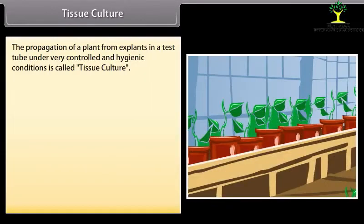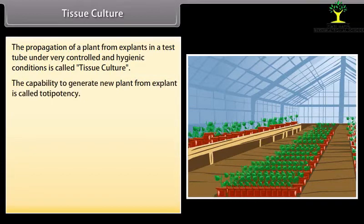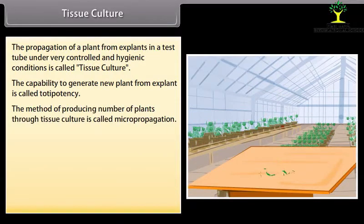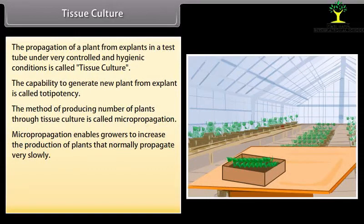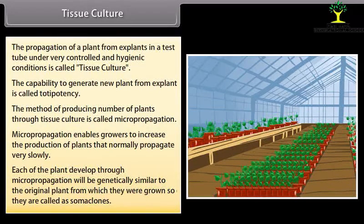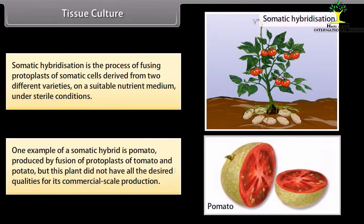Tissue culture: The propagation of a plant from explants in a test tube under very controlled and hygienic conditions is called tissue culture. The capability to generate a new plant from an explant is called totipotency. This method of producing plants through tissue culture is called micropropagation. Micropropagation enables growers to increase production of plants that normally propagate very slowly. Plants developed through micropropagation are genetically similar to the original plant and are called somaclones. Somatic hybridization is the process of fusing protoplasts of somatic cells from two different varieties on a suitable nutrient medium under sterile conditions. One example is pomato, produced by fusion of protoplasts of tomato and potato, though it did not have all desired qualities for commercial production.